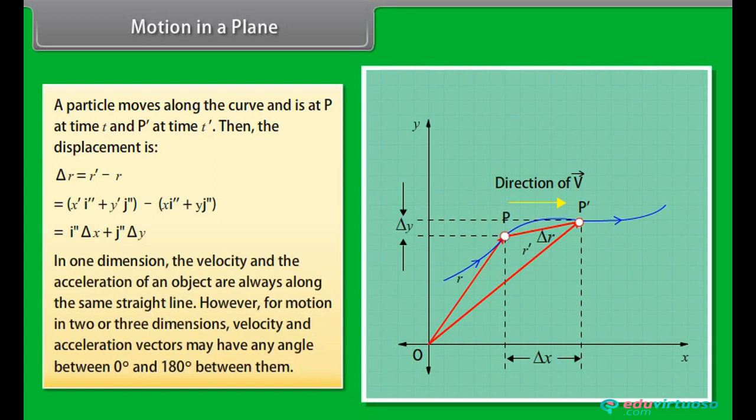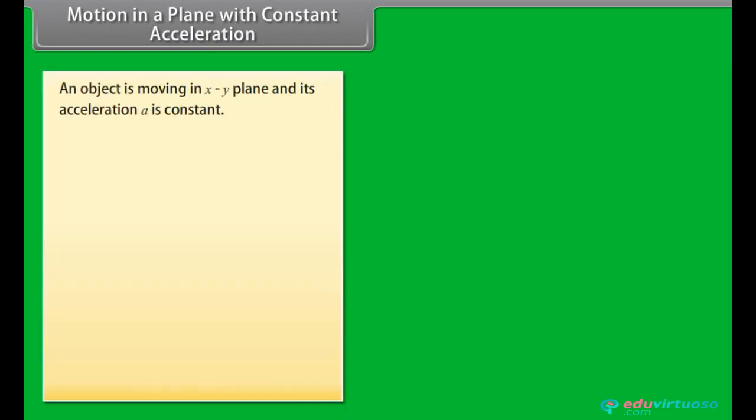In one dimension, the velocity and the acceleration of an object are always along the same straight line. However, for motion in two or three dimensions, velocity and acceleration vectors may have any angle between 0 degree and 180 degree between them.